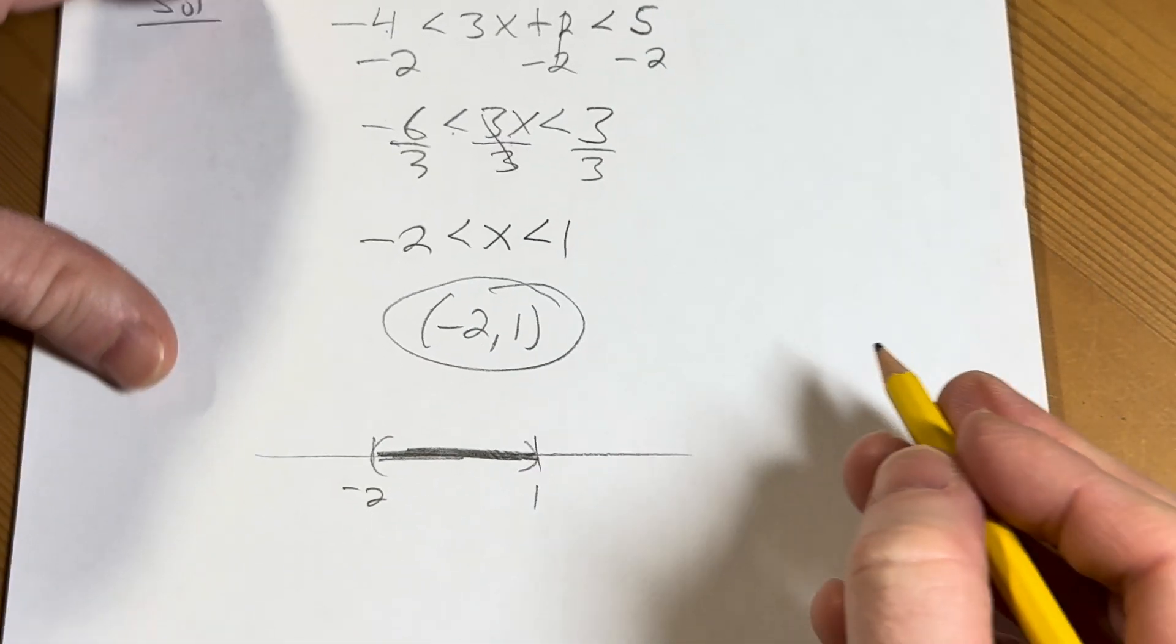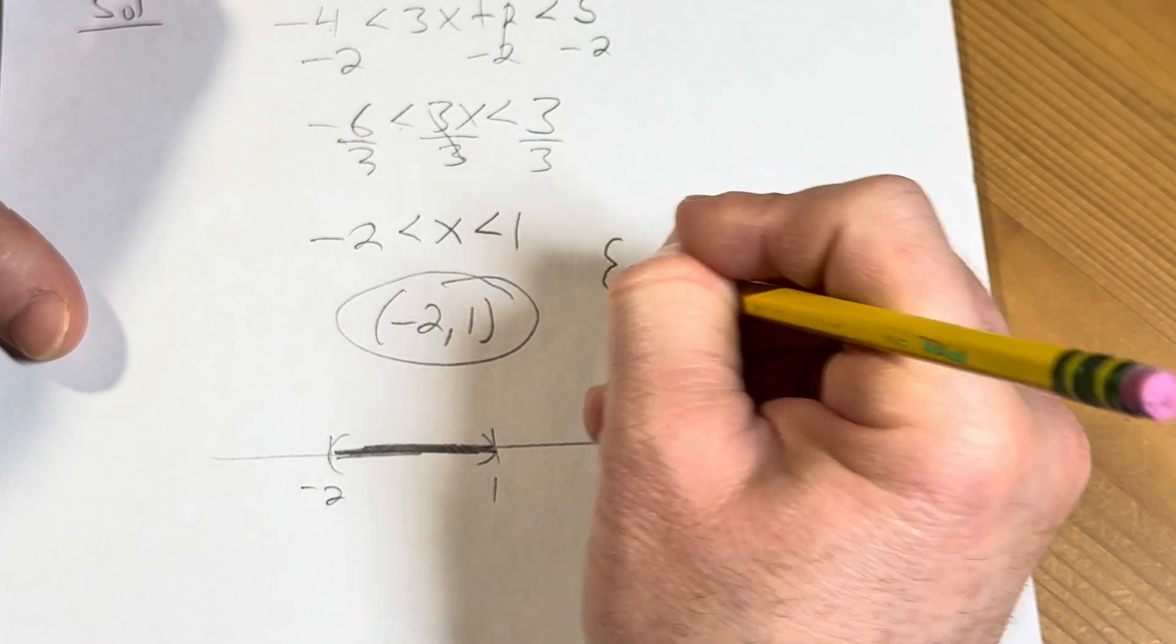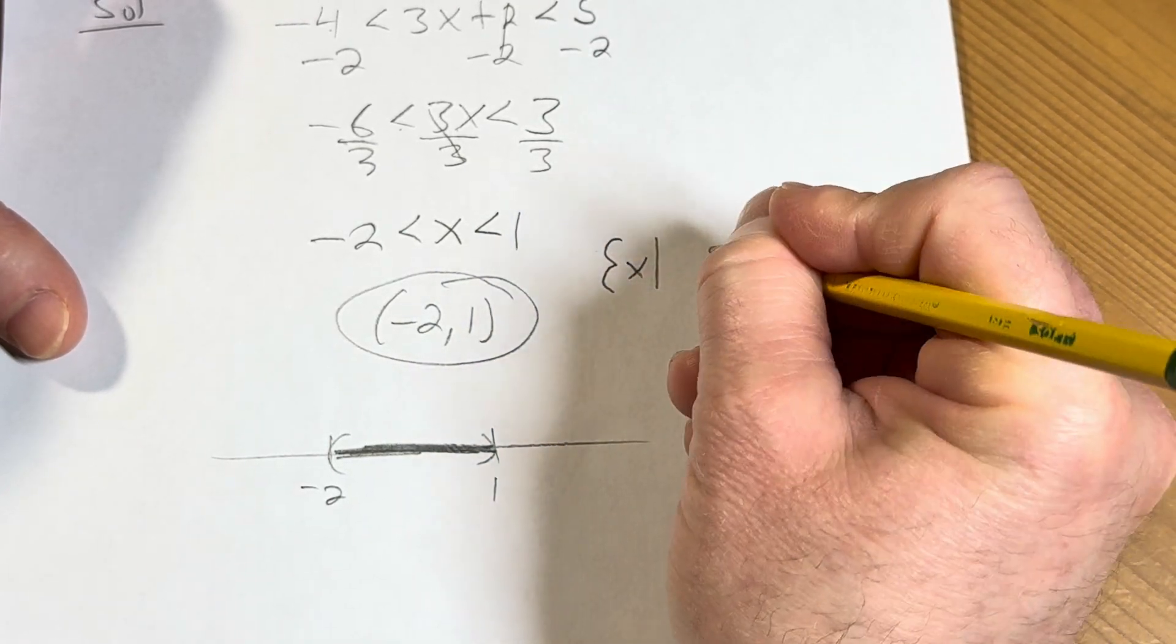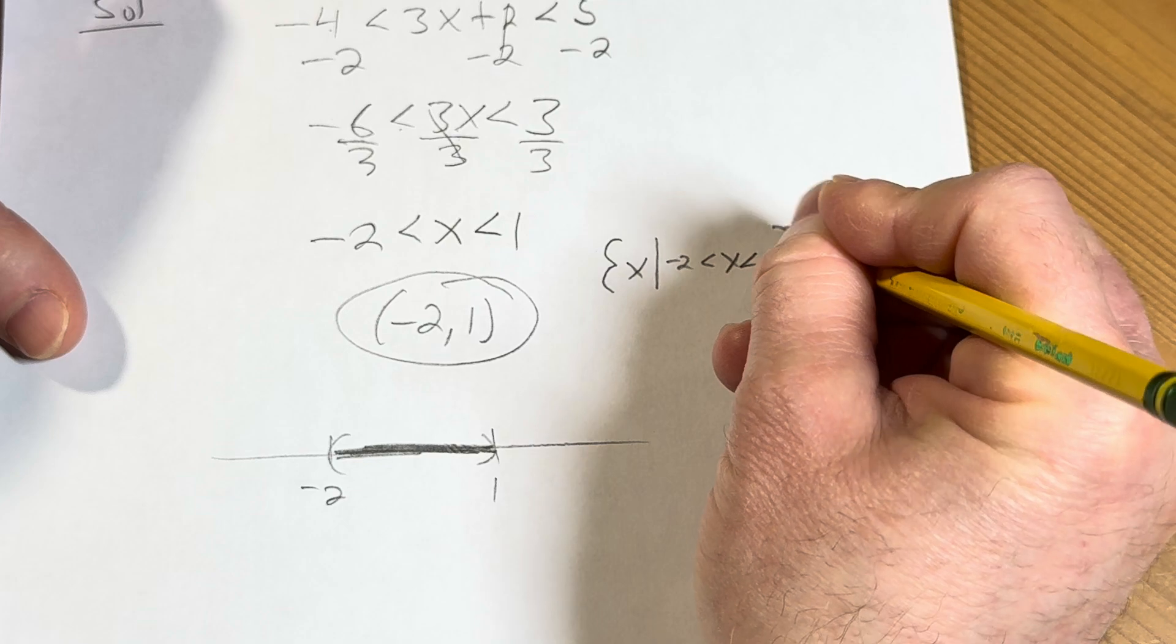And the answer in set builder notation, just in case you want it, would be x, the set of all x, so that x is between negative 2 and 1.